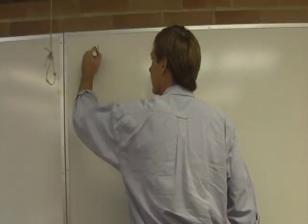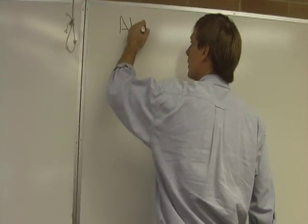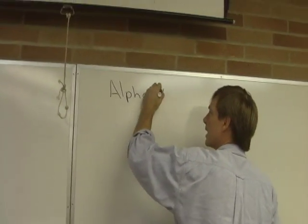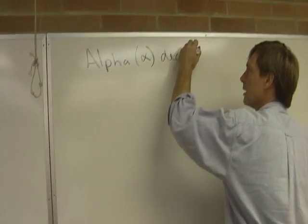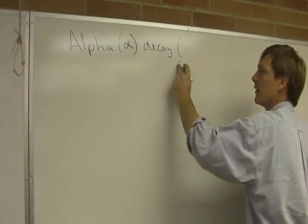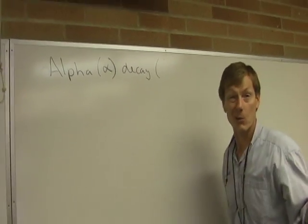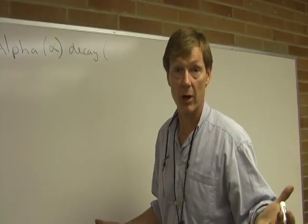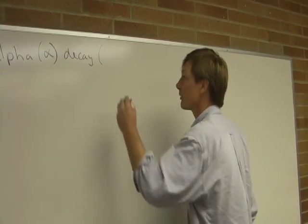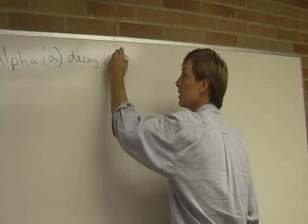First process, alpha decay. And an alpha particle, well, they didn't know what it was. It was like particle A, right? They didn't know what was being discharged at the time. They finally figured out it's a helium nucleus.